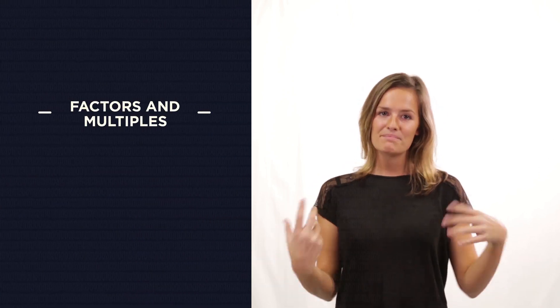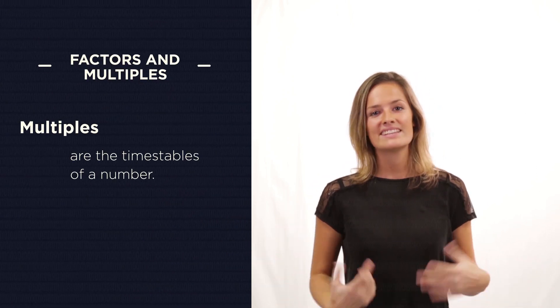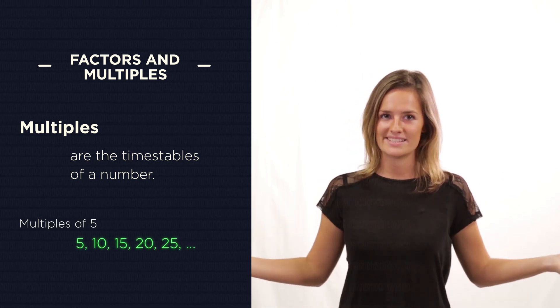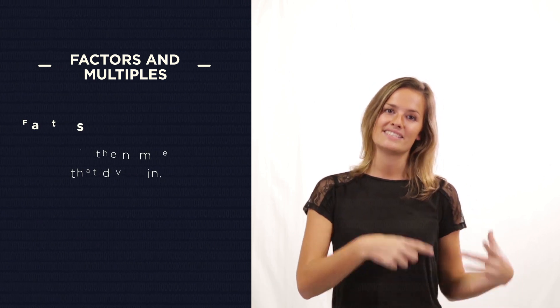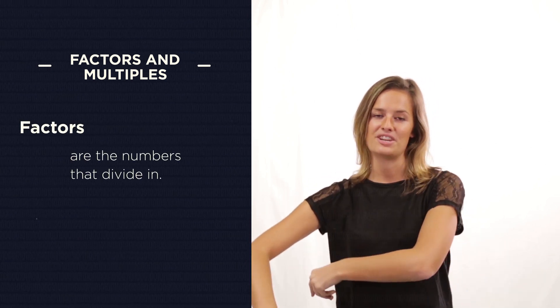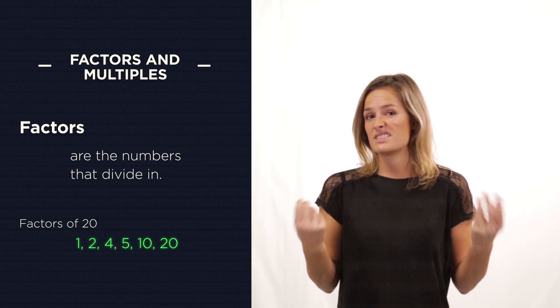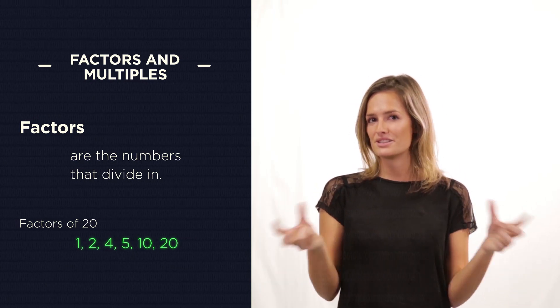So there you have factors and multiples. Multiples are the times tables. Just think, multiples sounds like multiply, so it's big numbers. And then factors divide exactly into the number. Just think, factors sounds like fractions, which sounds small, so factors are small numbers.